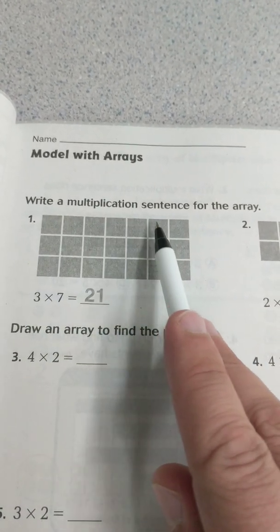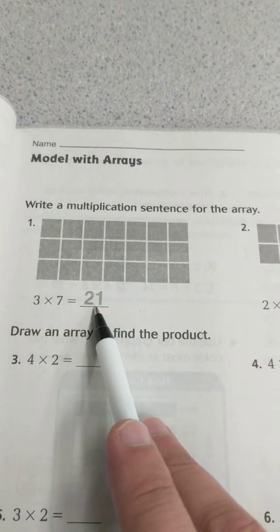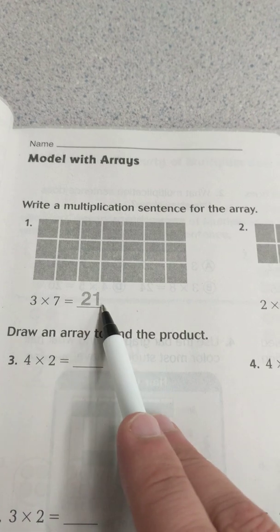1, 2, 3, 4, 5, 6, 7 in each row. And if we count all these up it will equal 21. Or 3 times 7 equals 21.